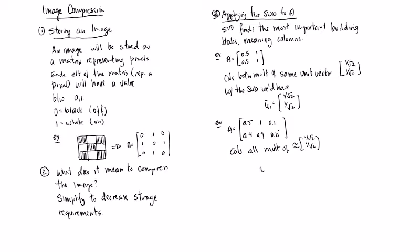So here we have u1 would be approximately that, could be plus or minus, and then u2 would be perpendicular to u1, and this would pick up the rest of the variance.